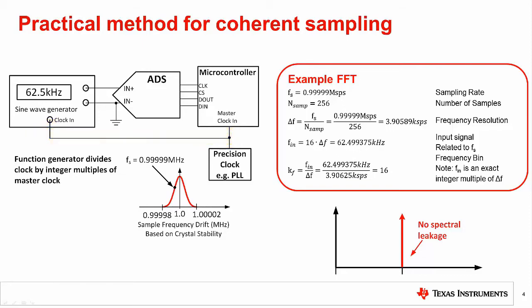Even though synchronizing the signal generator to the microcontroller theoretically solves the coherent sampling issue, high-precision PLL clock generators and high-end signal generators are typically used in this kind of characterization, as clock jitter and drift will introduce additional error. Also note that this kind of characterization is normally required for high-resolution converters with resolutions of 18 bits or higher.